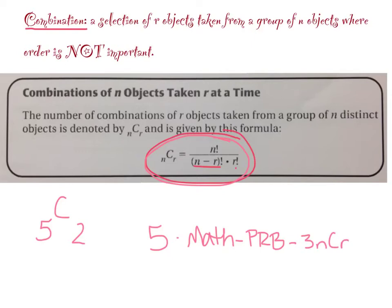Then you put in whatever number your r is, so in this case you'd put the 2. So when you type it in the screen it looks like 5 nCr 2. Then you hit enter and it will do it for you. So you do have that option of using the calculator, but you have to know this formula.